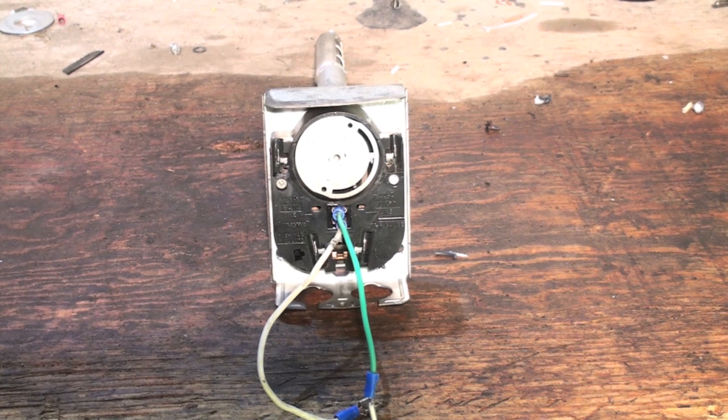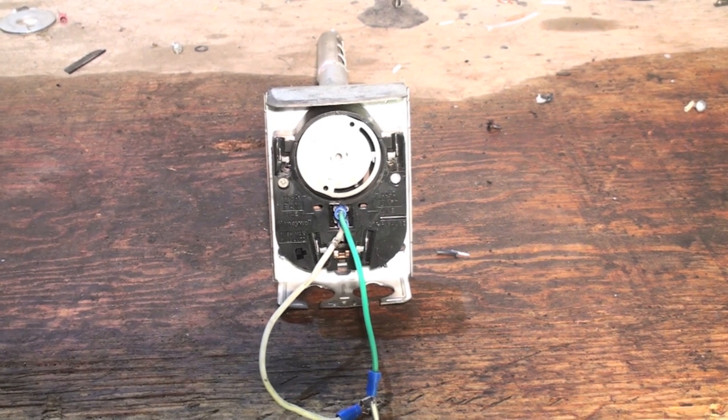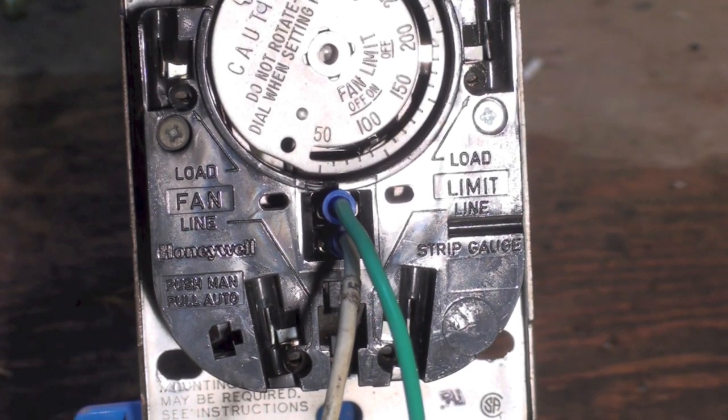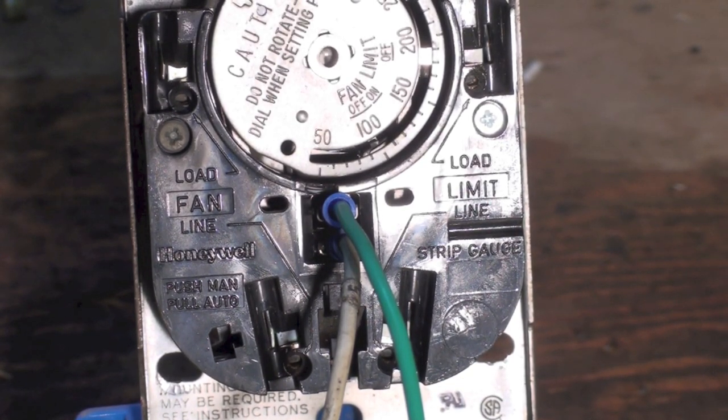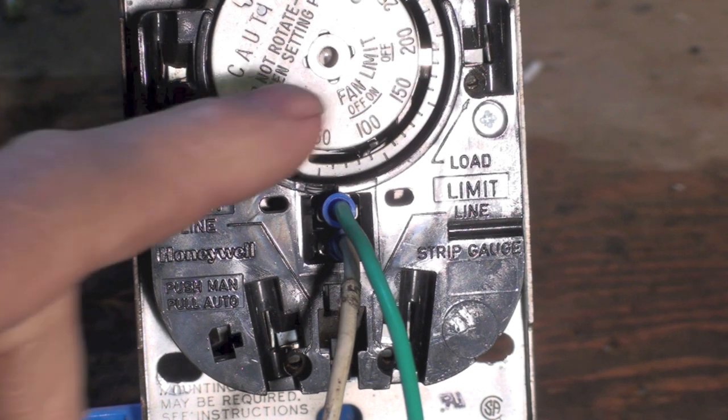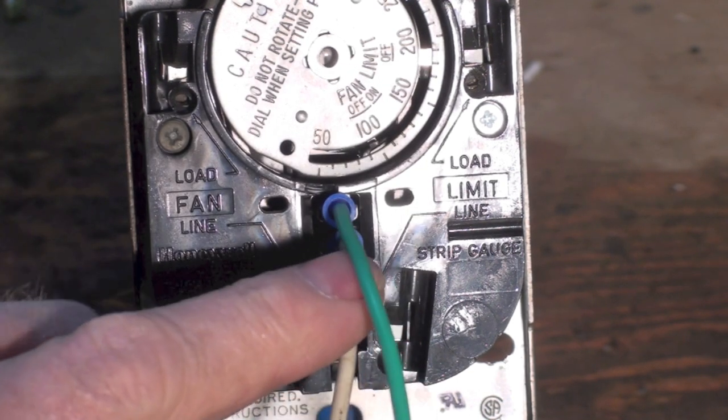Okay, a little closer here. This is a normal Honeywell fan and limit switch with the limit switch on one side and the fan switch on the other, and a spiral bimetal that moves the switches. But this one has two wires coming right here. Now I'm going to pull those wires off so you can see where they actually hook up.